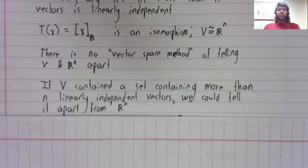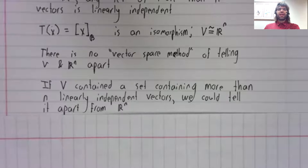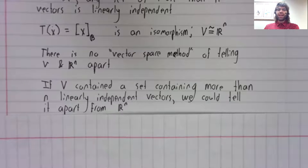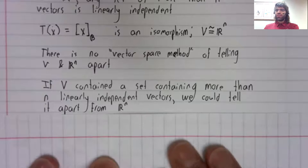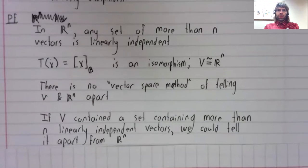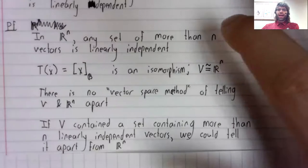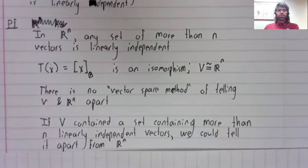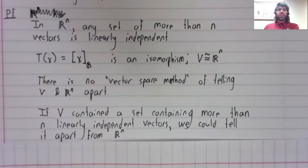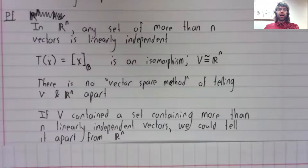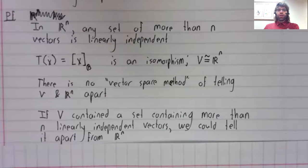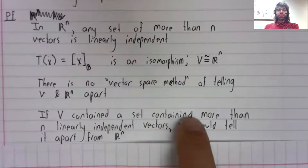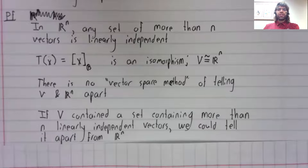Well, if V contained a set containing more than N linearly independent vectors, when we know that R^n cannot, that would be a vector space way of distinguishing V from R^n. Ergo, V does not contain a linearly independent set containing more than N vectors.